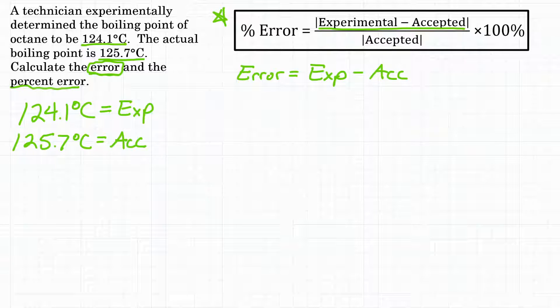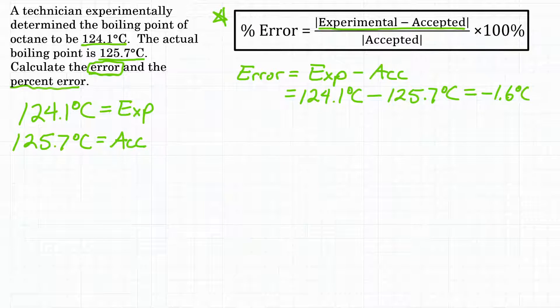So we could calculate that pretty quickly. We would just take our experimental value, which is 124.1 degrees Celsius and subtract our accepted, which is 125.7 degrees Celsius. And then doing that math quick, we get an answer of negative 1.6 degrees C.